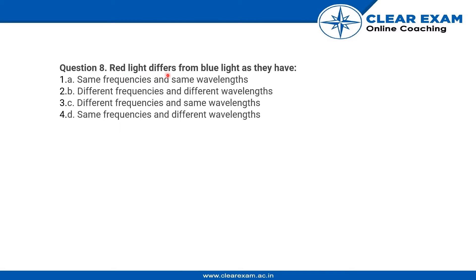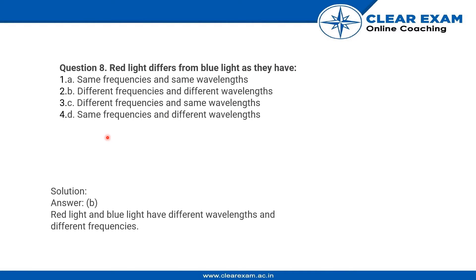The question asks how red light differs from blue light in the spectrum. Each and every color is unique because they have different frequencies and therefore different wavelengths. So red and blue light will have different wavelengths and different frequencies. This was a fact-based question.